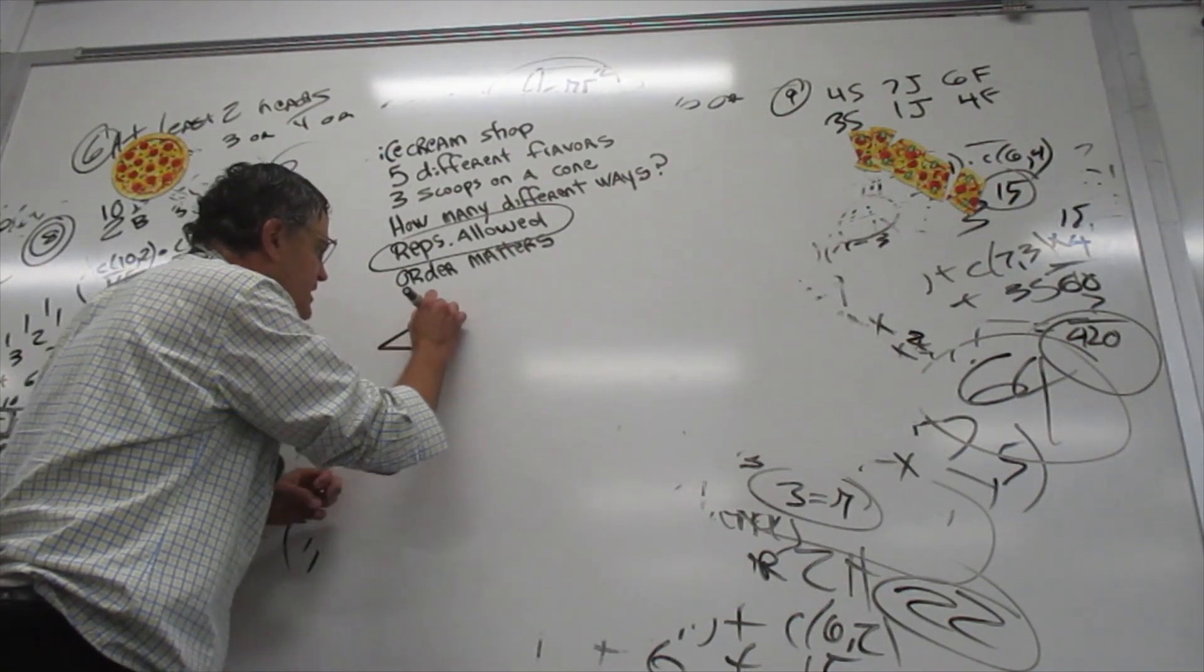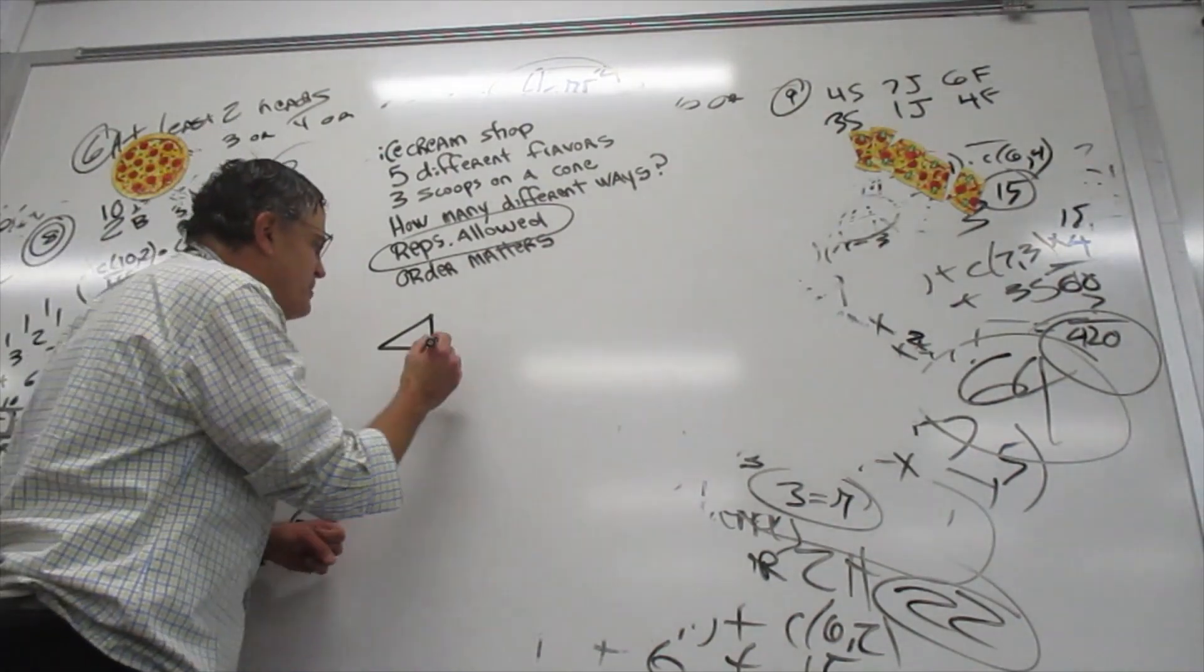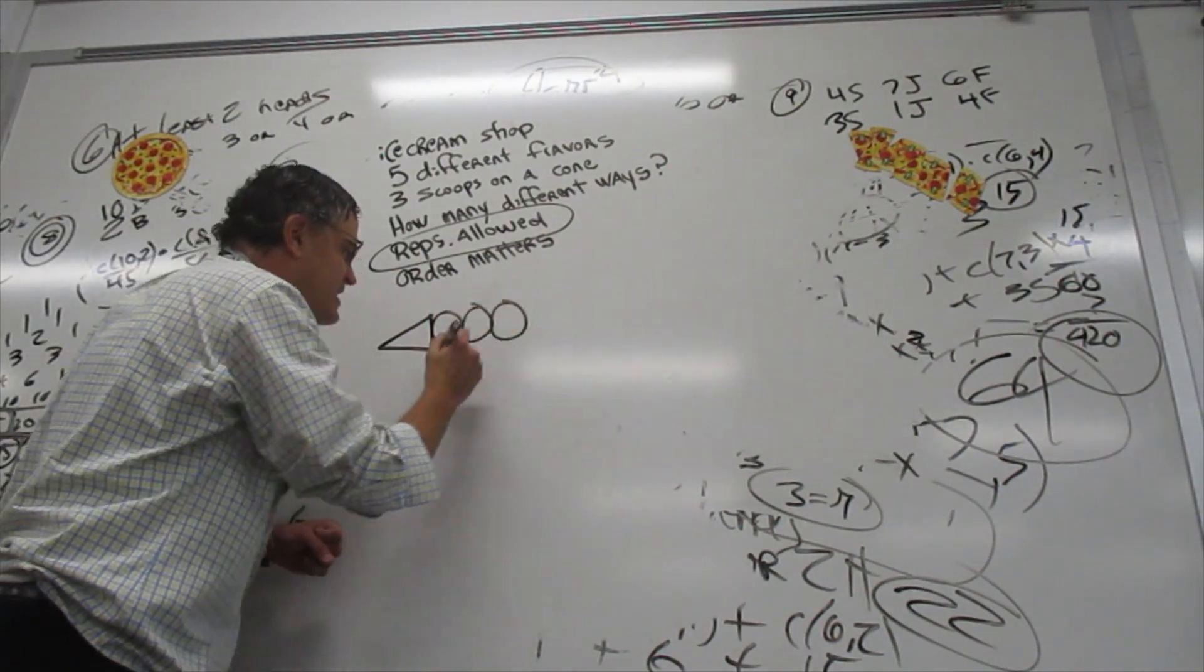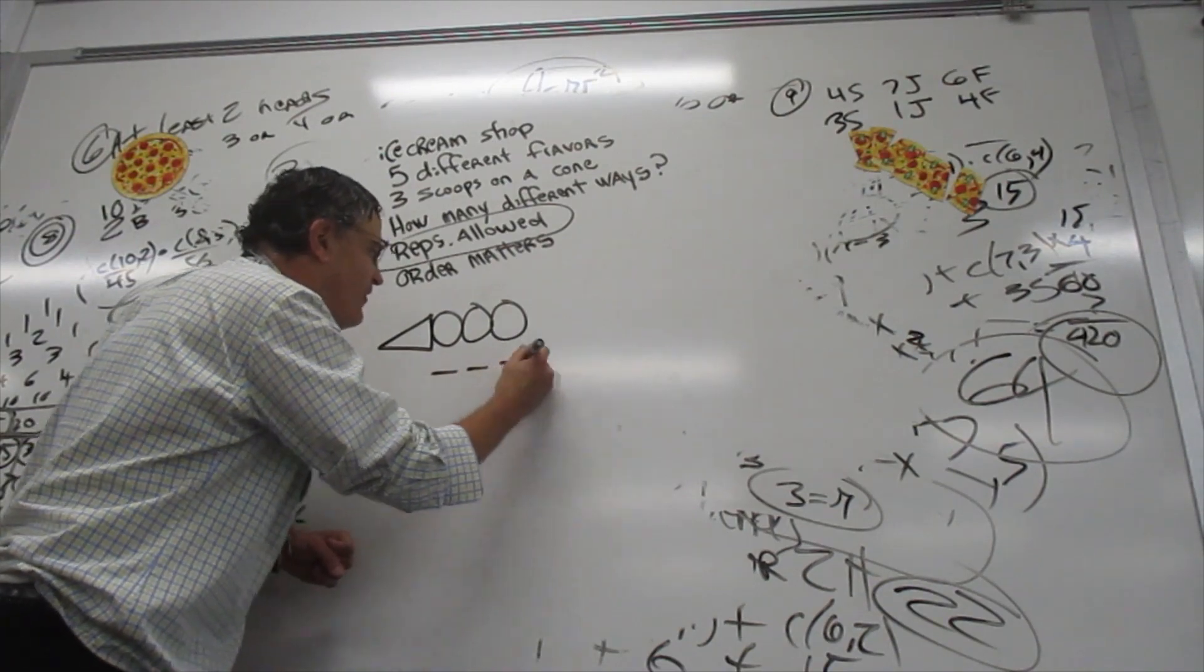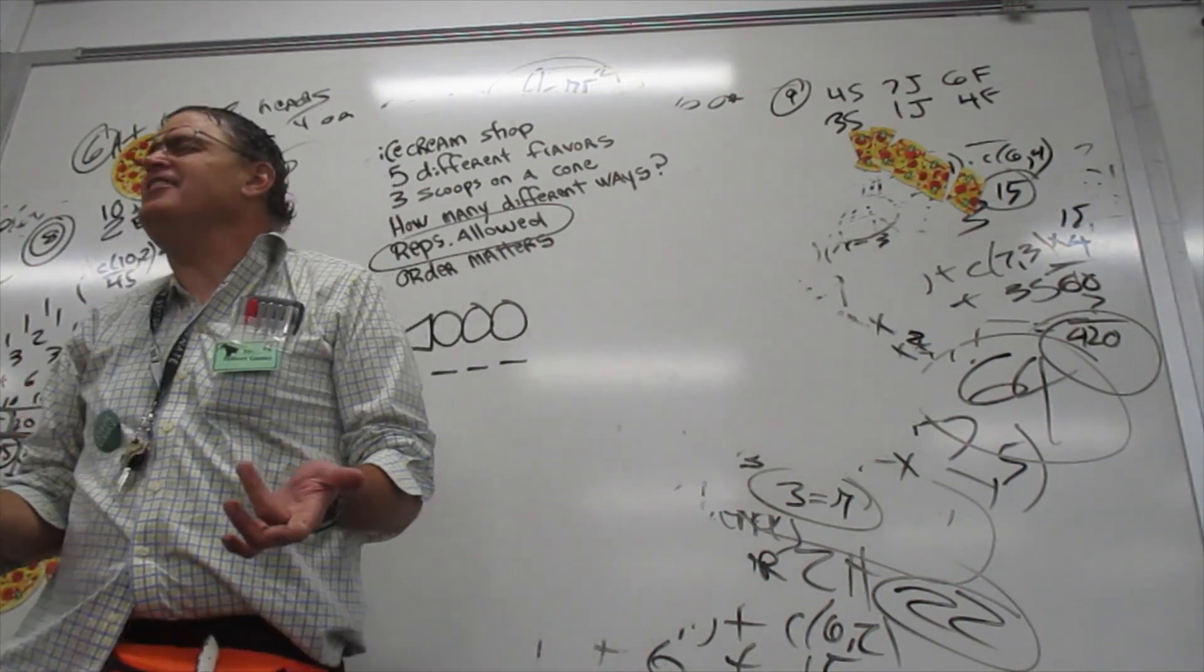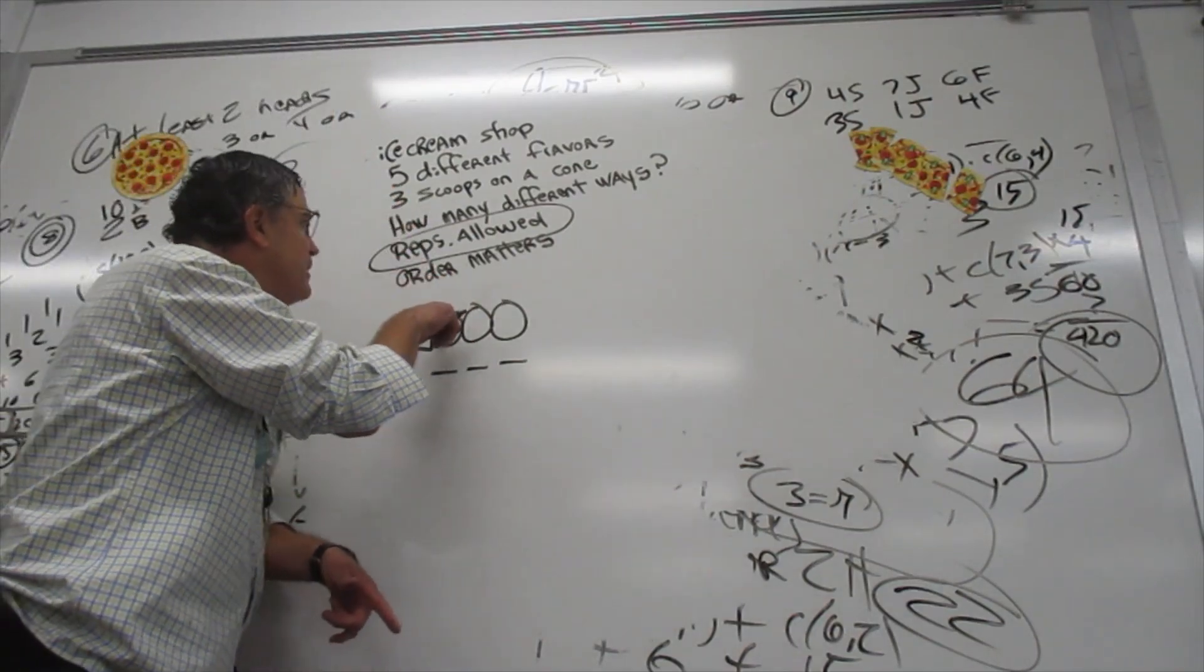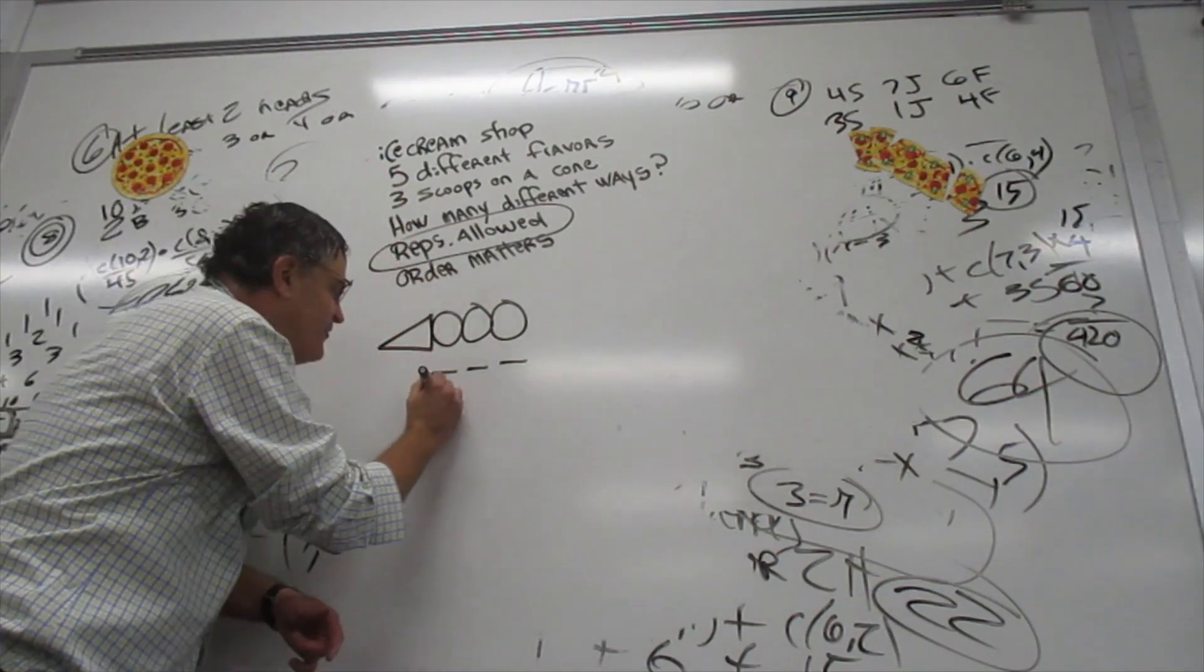Go ahead and put the ice cream cone to the side and you're going to put three scoops on it. Put three slots below it and you ask yourself, how many different flavors could I put on the bottom scoop? Well, there are five.